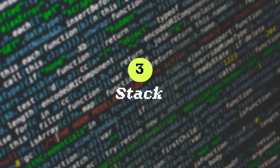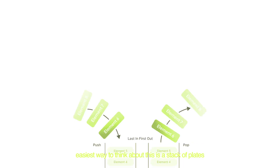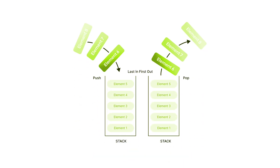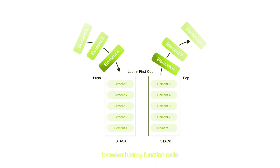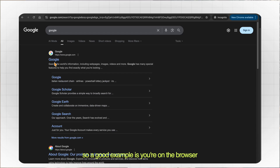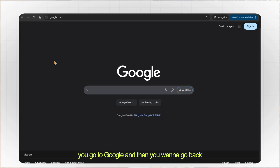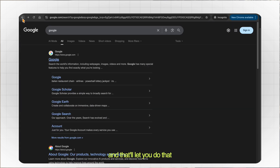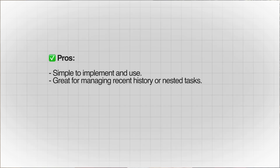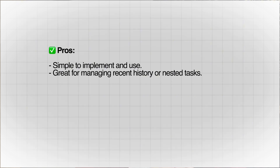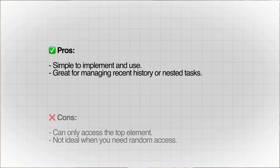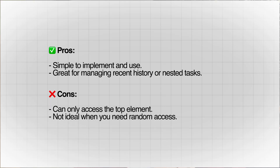Data structure number three is a stack. The easiest way to think about this is a stack of plates — you only really touch the top one, last in first out. Common operations are push to add and pop to remove. It's used in undo features, browser history, and function calls. A good example is the browser back button. The pros are that it's simple to implement and easy to use, really good for managing recent history. The cons are that you can only access the top element and it's not ideal when you need random access.